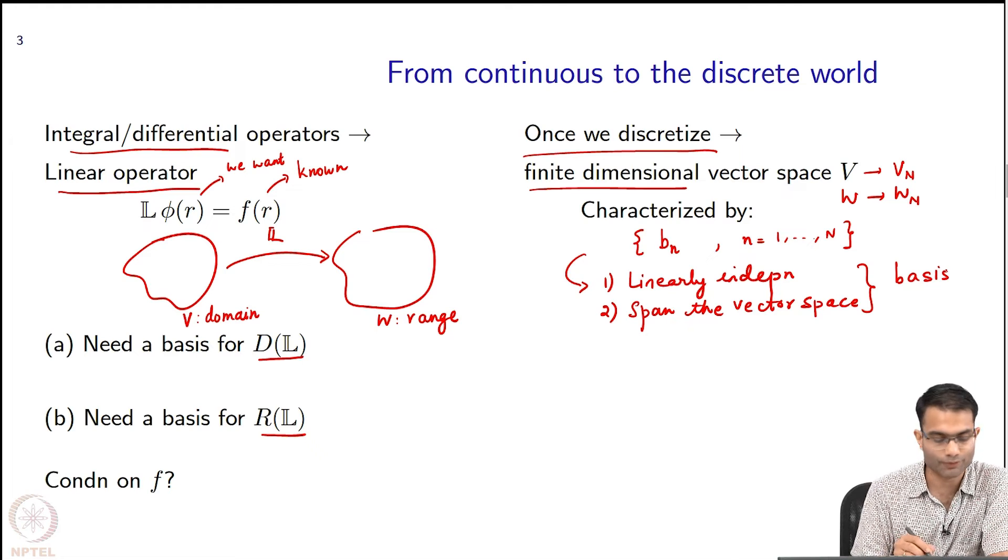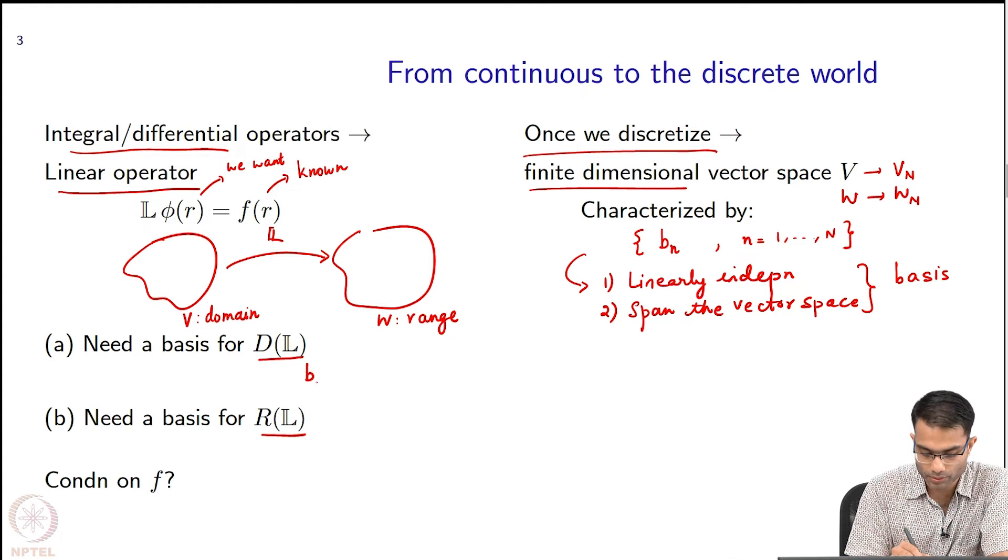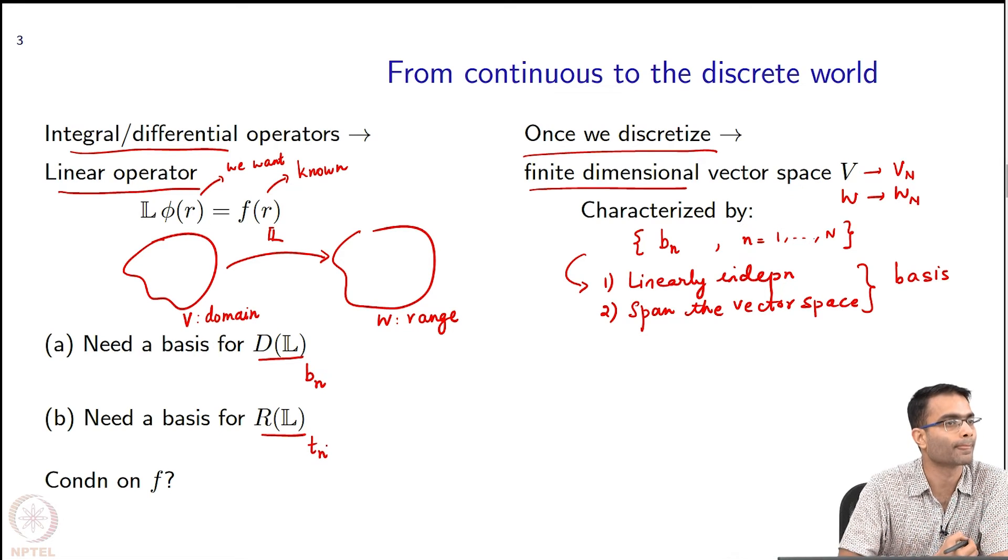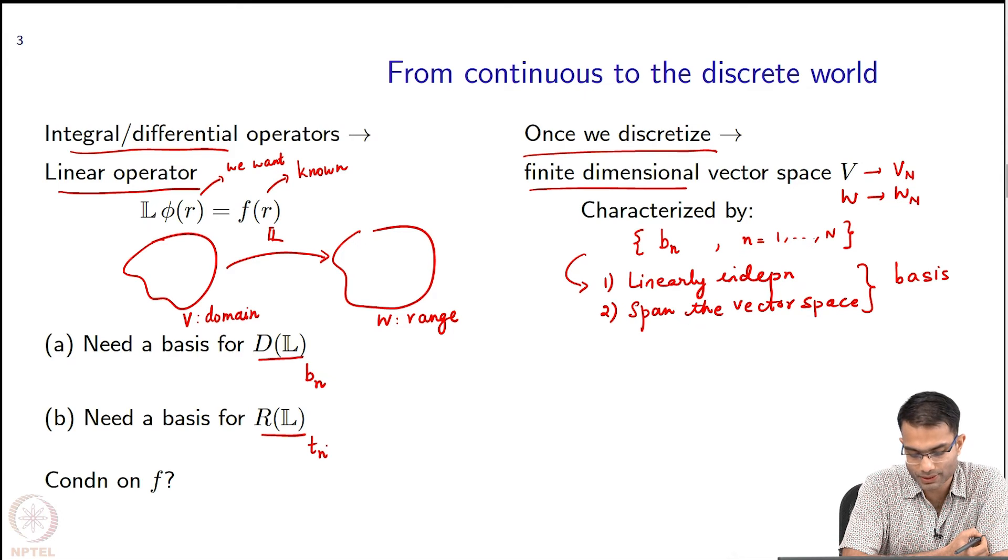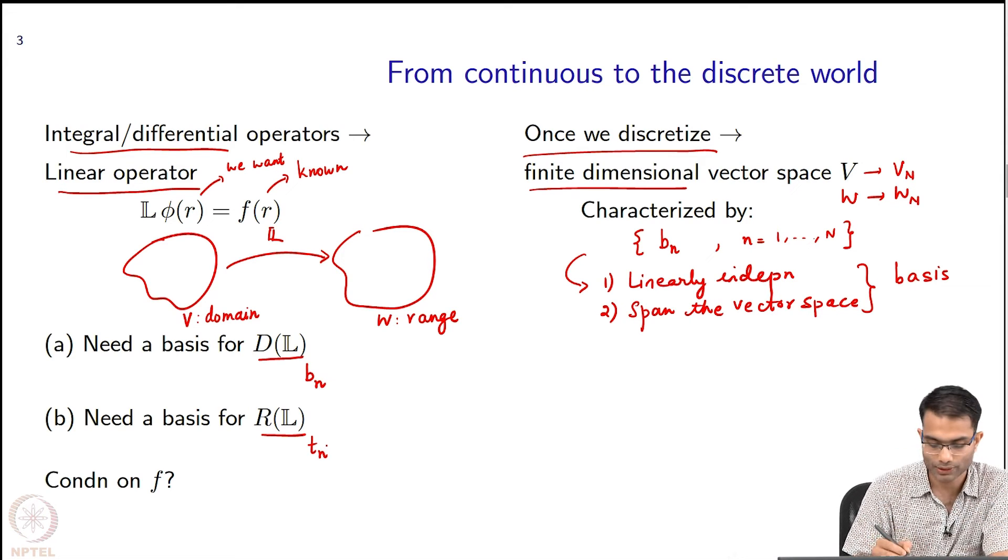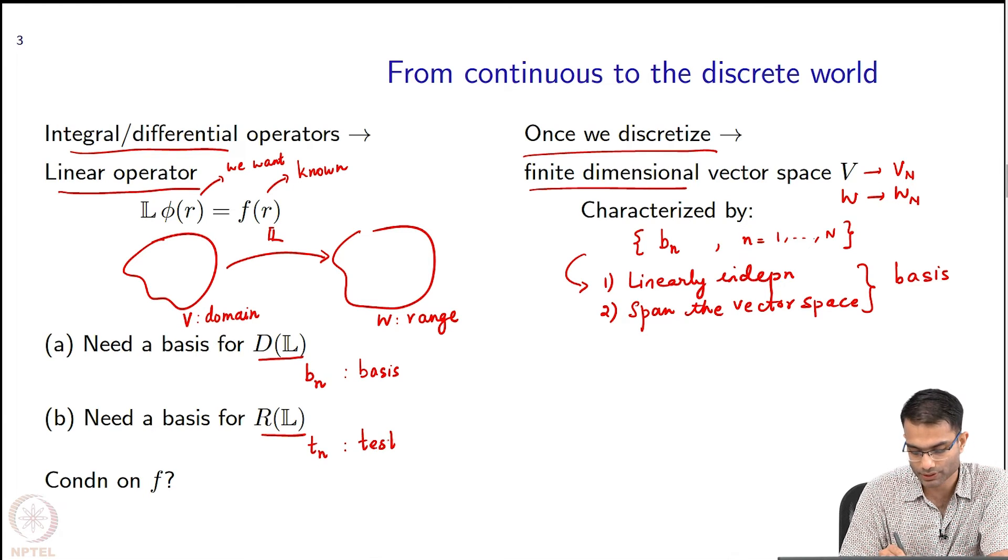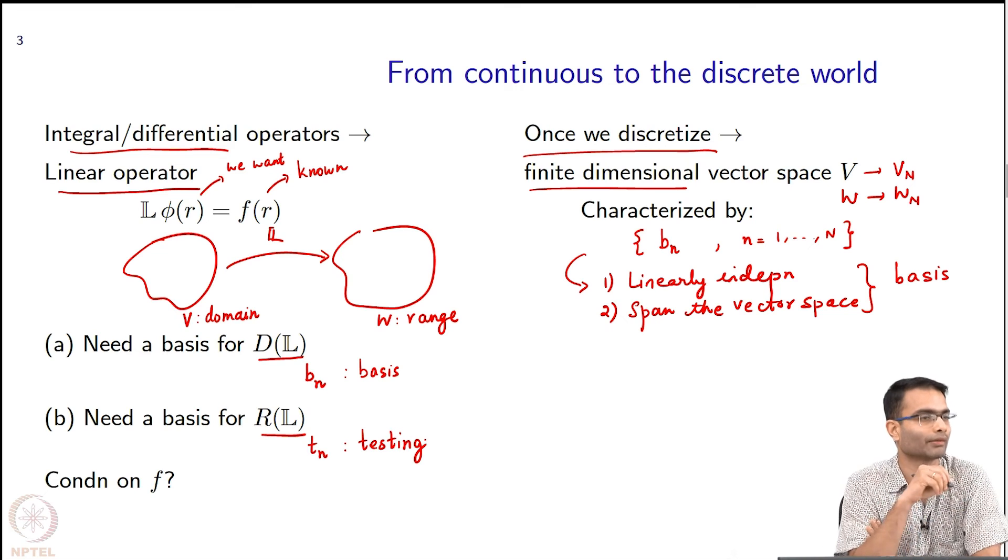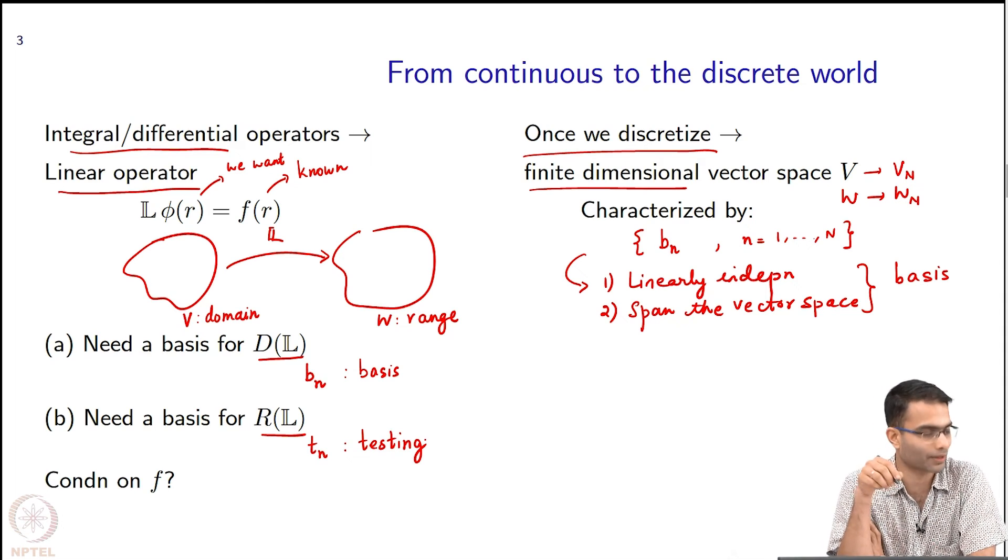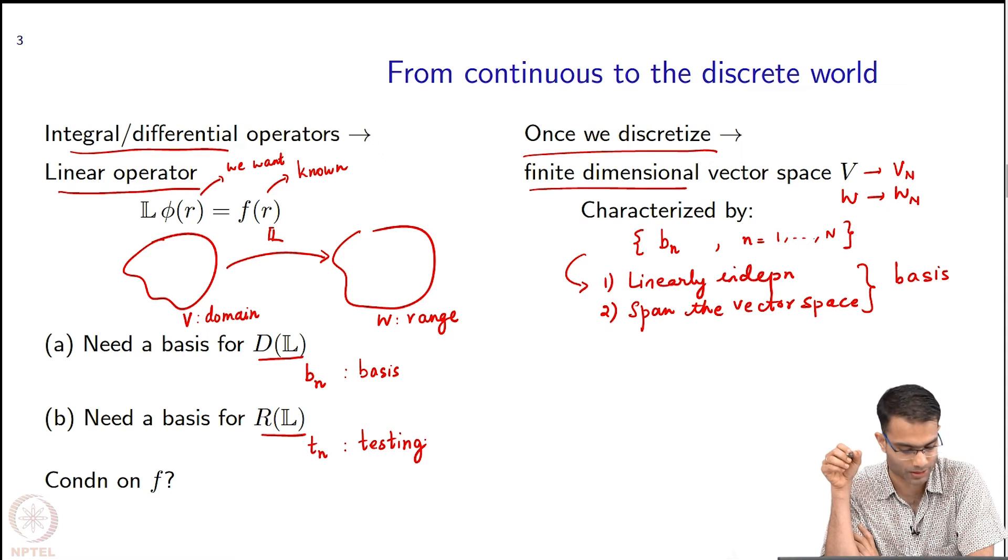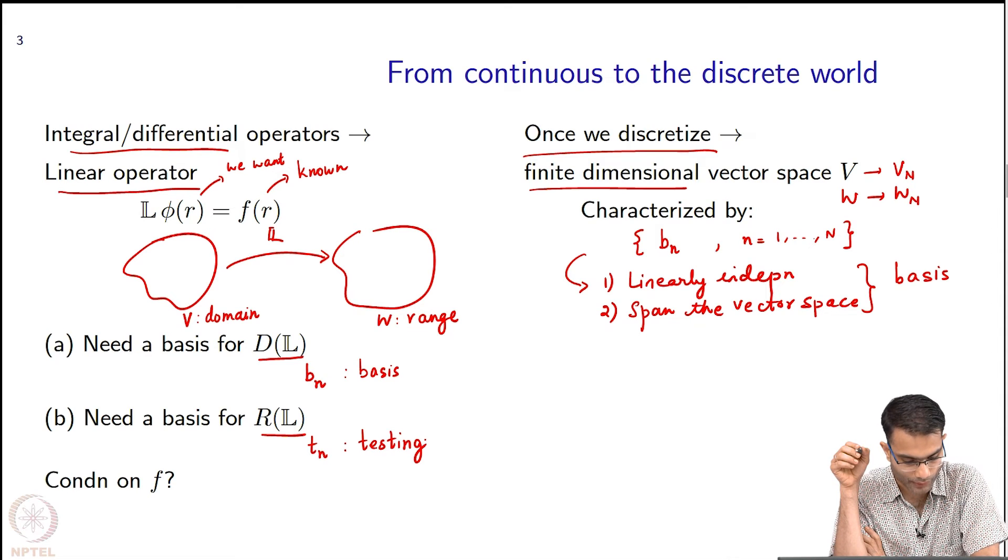So I am going to call the set of basis vectors for the domain, I am going to give the symbol b. So b_n. And for the range, I am going to use a slightly different symbol, I am going to call them t_n. So the way to remember it is—for the domain I am going to call these basis functions, and for the range I am going to call these testing functions. That is why the letters b and t.